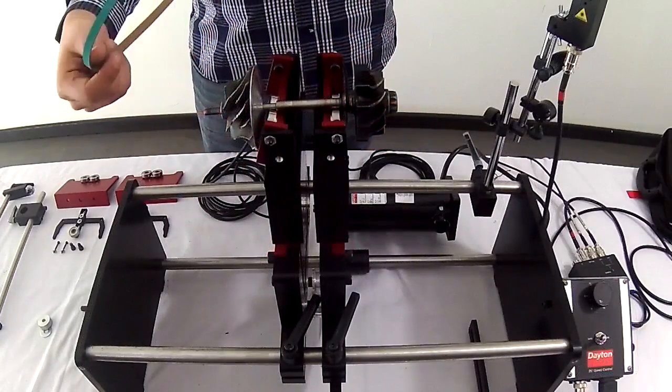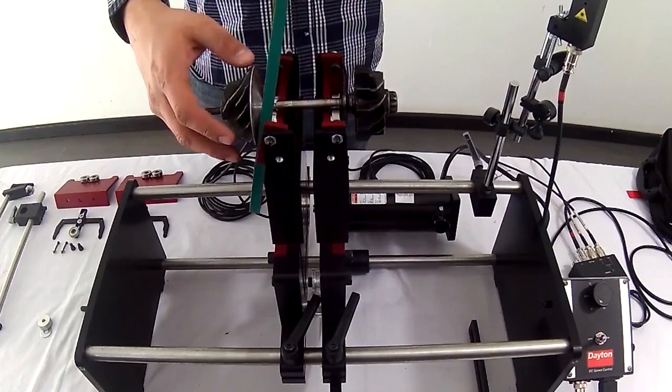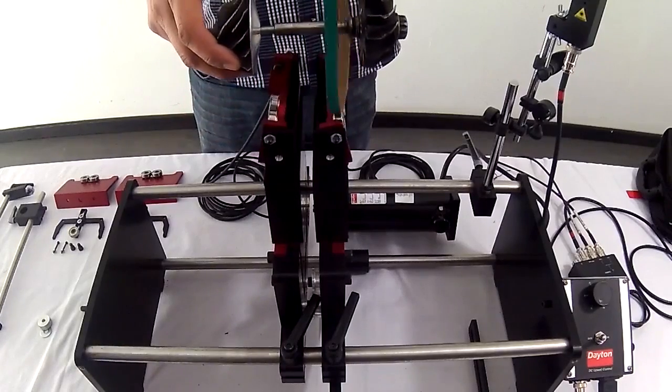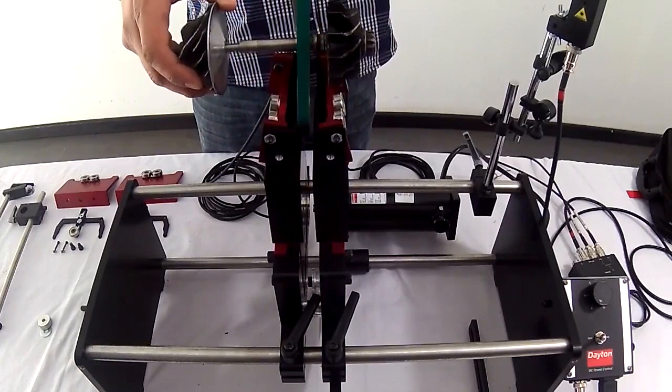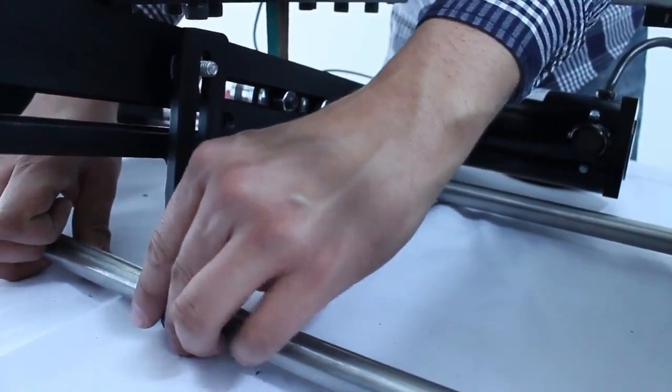It's very important to leave enough distance between the pedestals for the belt so it doesn't touch the supports. We put the belt around the shaft and place the tensor guide of the transmission.